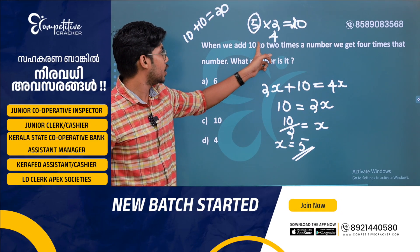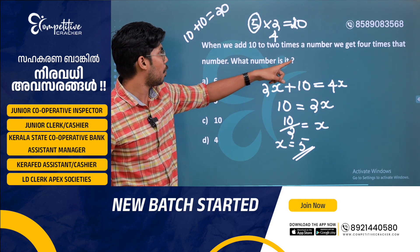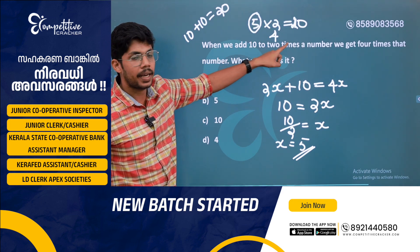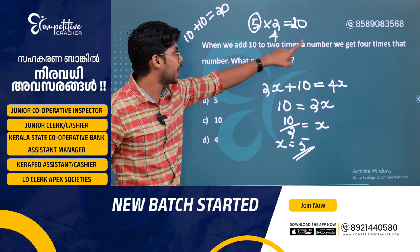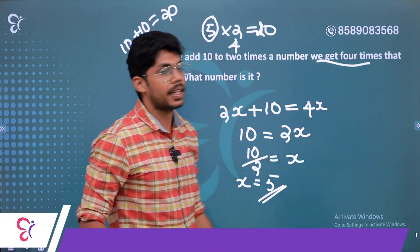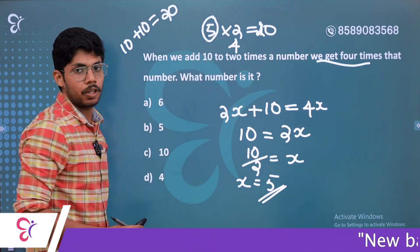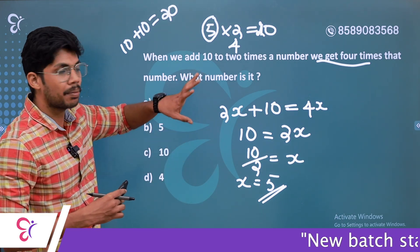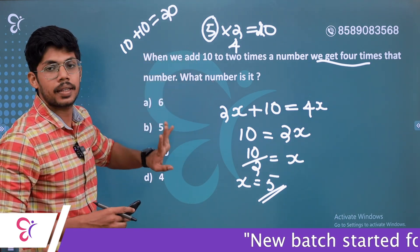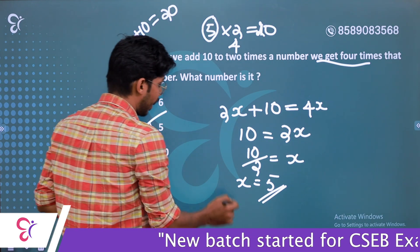When we add 10 to 2 times the number 5, we get 20. And 4 times the number 5 is also 20. So the answer checks out. Option B is the answer — the number is 5.